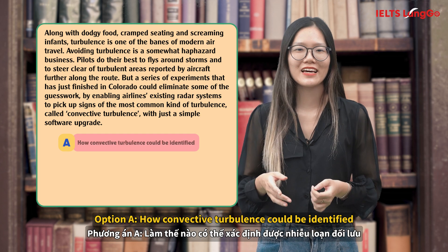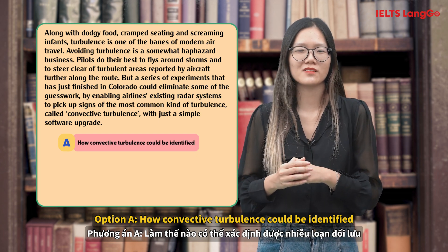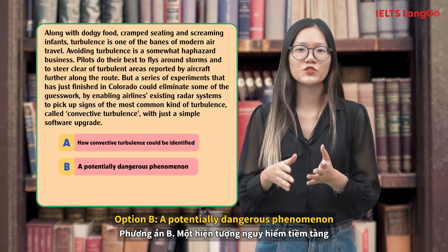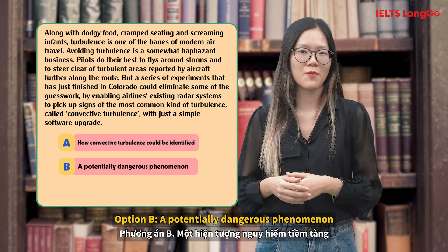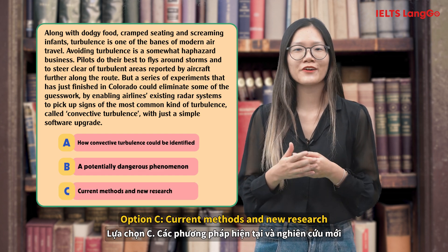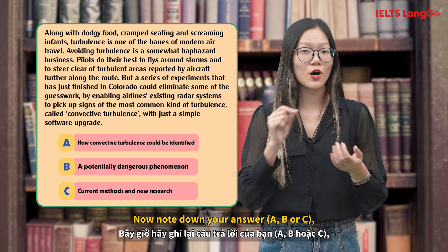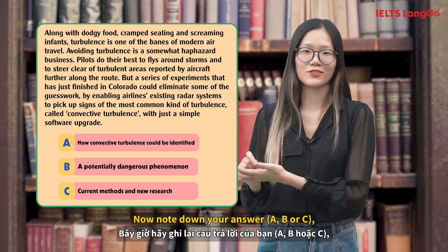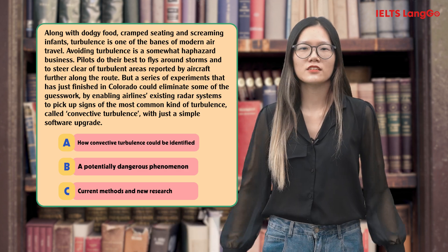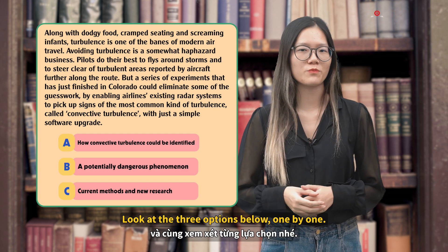Option A: How convective turbulence could be identified. Option B: A potentially dangerous phenomenon. Option C: Current methods and new research. Now, note down your answer — A, B, or C. Okay, let's look at the three options below one by one.